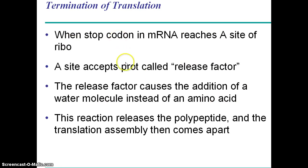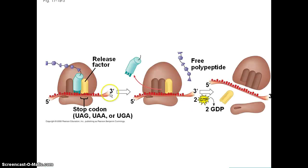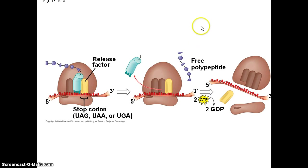When a stop codon is reached, rather than a tRNA docking, it's a protein called a release factor that adds water to the chain rather than an amino acid, and then the chain is released. The stop codon attaches to the release factor, this chain is cut off or cleaved, and you release the polypeptide. Then it will fold into its three-dimensional conformation, and you may potentially have a functioning protein.